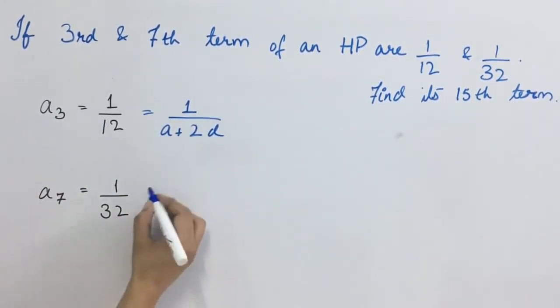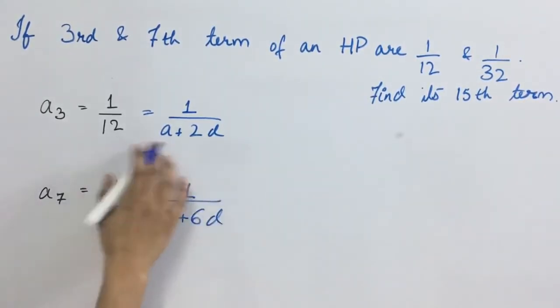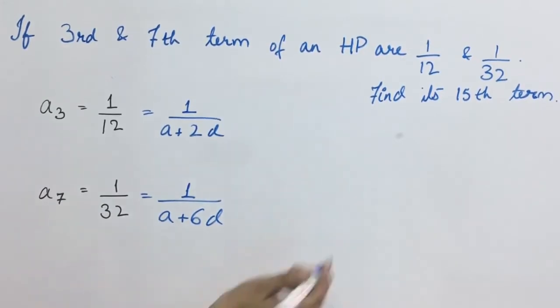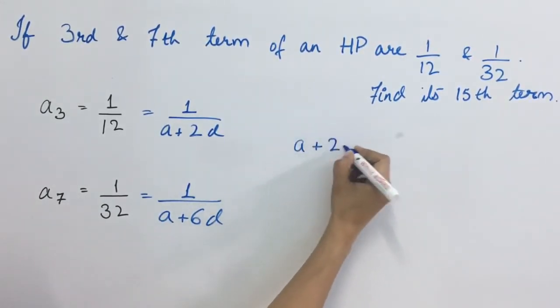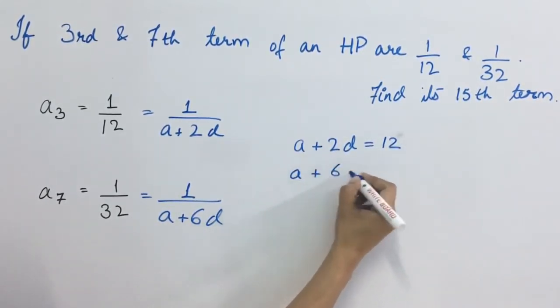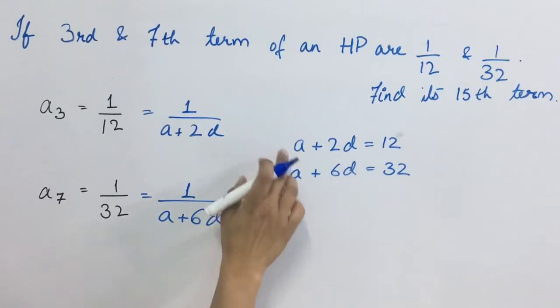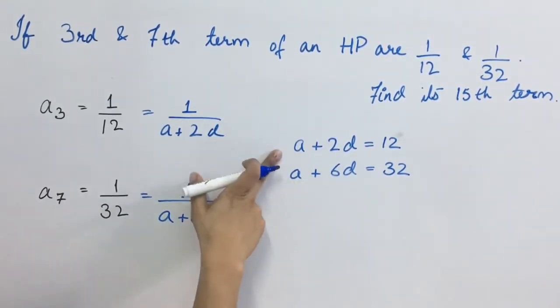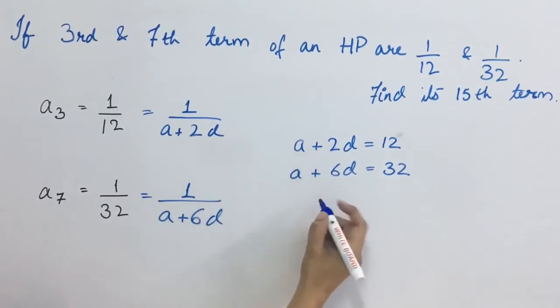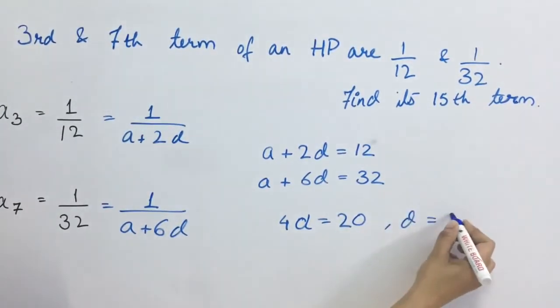Similarly, for A7, this term will be equal to A plus 7 minus 1 into D, that is 6D. So from both these cases we got 2 equations. A plus 2D is equal to 12. A plus 6D is equal to 32. If we subtract first equation from second equation, A will get cancelled. What remains? 6 minus 2 that is 4D is equal to 20. So D value is D equals to 5 here.